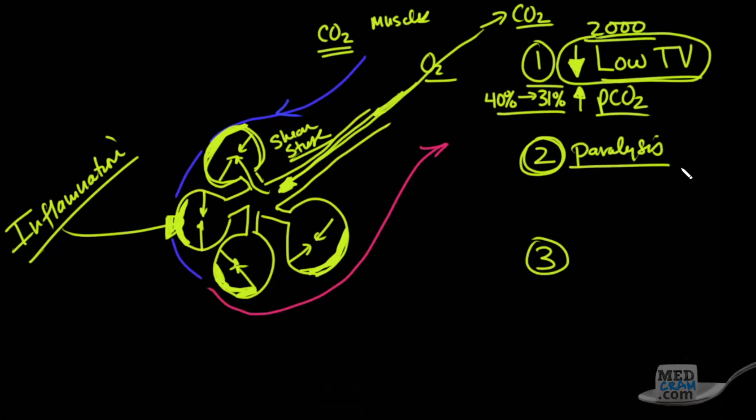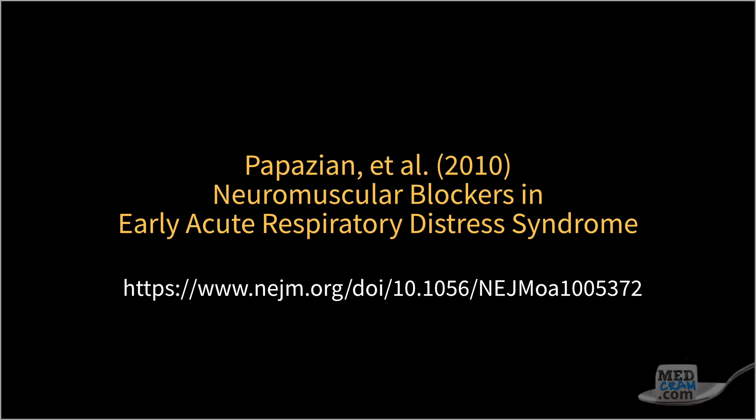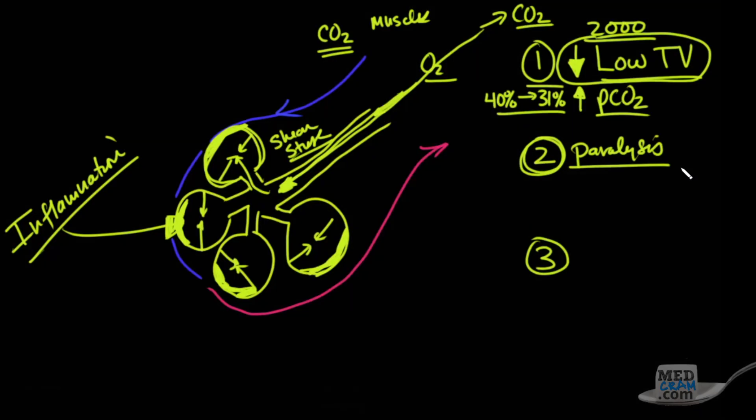Paralysis requires pretty intensive care in the intensive care unit. You need good ancillary services, you need good respiratory therapists, you need good nursing, something that you might not get if there's a huge outbreak, but you could get if attention was made to this. So this paper, also published in the New England Journal of Medicine, and by the way I'm going to give links to all of these papers in the description below, they were able to drop the mortality from 41% down to 32%. And this paper was published in 2010. So far so good.